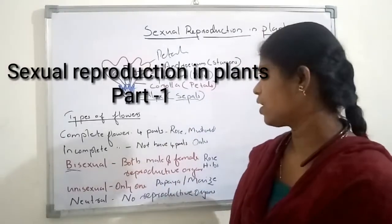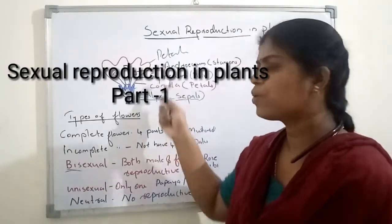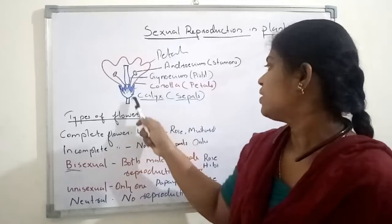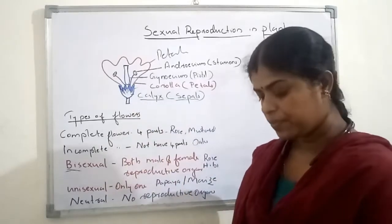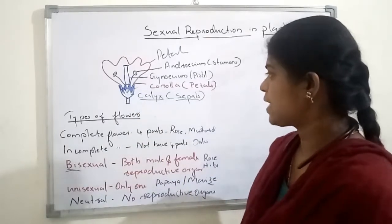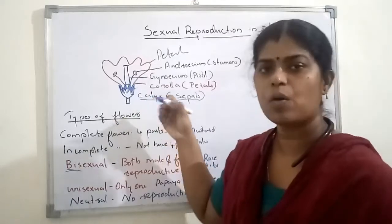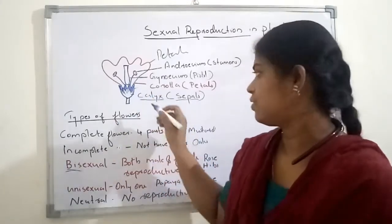Parts of the flower. A flower has four major parts. The outer portion of the flower is known as the calyx. Calyx is the outermost whorl of the flower.